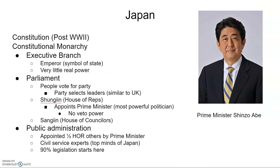Moving on to Japan, we have a constitutional monarchy written post-World War II — very different from before, as we saw in our history sections. The executive branch still has the emperor in power, but he is really a symbol of state with varied and little real power, even though he has some ceremonial roles. In the parliament, people vote for the party, and the party selects leaders — very similar to the UK.